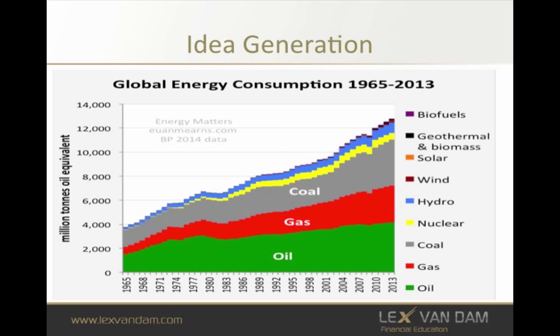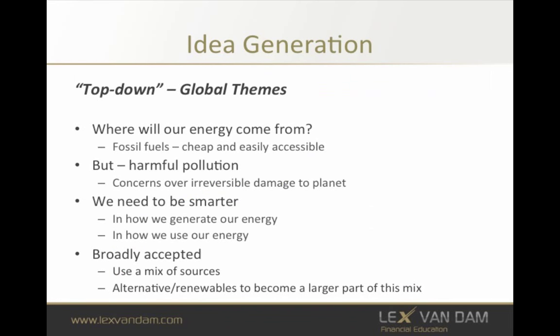This chart shows global energy consumption from 1965 to just two years back, going upward quite dramatically. It shows how energy needs and consumption have increased over the past 50 years. What's also interesting is how reliant we still are on oil, gas, and coal. So we have these two things running together: growth in population and growth in energy consumption. Where is our energy going to come from in the future?